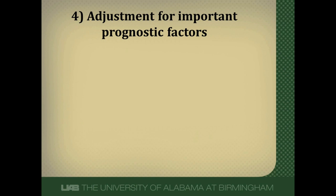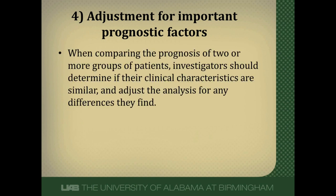The fourth question: was there adjustment for important prognostic factors? When looking at outcomes across two or more groups, you want everything to be the same between them except one variable. If we're comparing stage one and stage four cancer survival, we want their ages, comorbidities, and everything else to be the same — differing only in cancer stage. You want to look to see that the authors identified differences between groups and then dealt with them in some way.